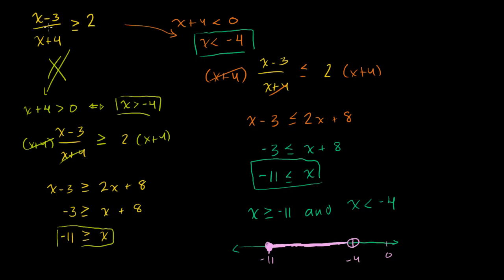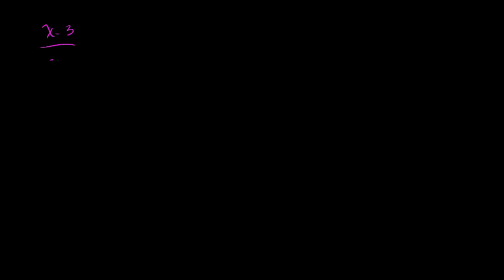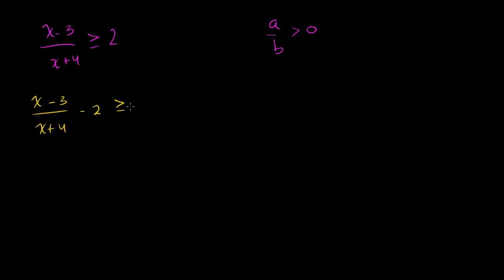Now let's do it the other way — where the logic is that the numerator and denominator both have to be positive or both negative. Same problem: x minus 3 over x plus 4 is greater than or equal to 2. In order to do that reasoning from the first video, I said if a divided by b is greater than 0, either both are positive or both are negative. But this only works when we have a 0 on the right side. We don't have a 0 here, we have a 2. So we subtract 2 from both sides: x minus 3 over x plus 4 minus 2 is greater than or equal to 0.